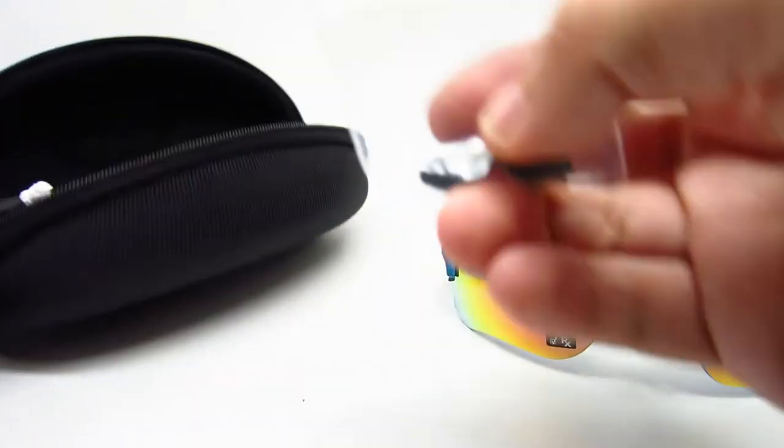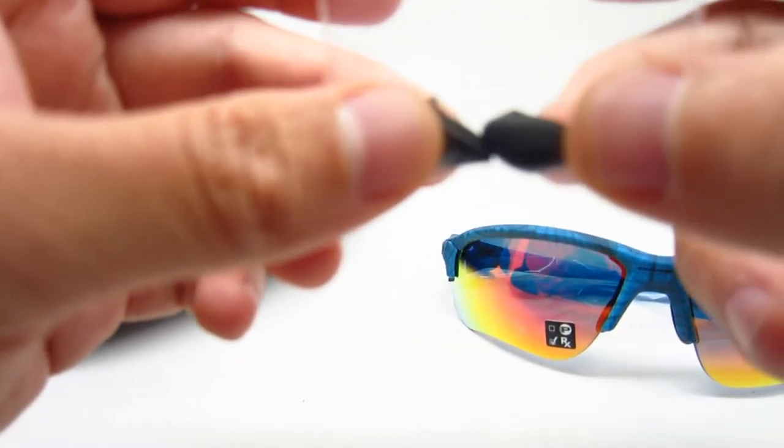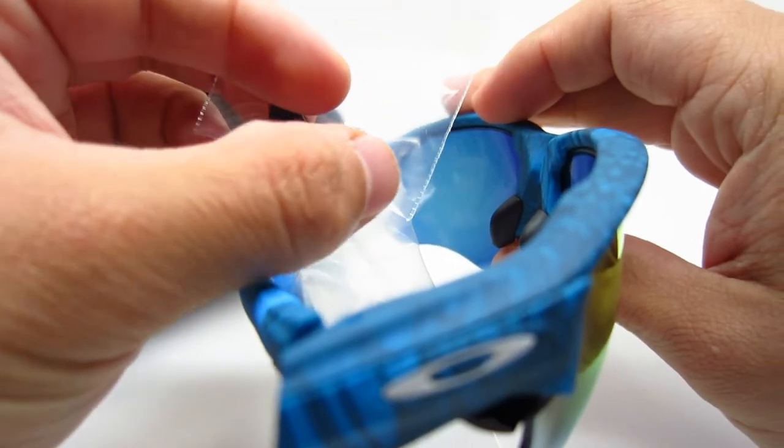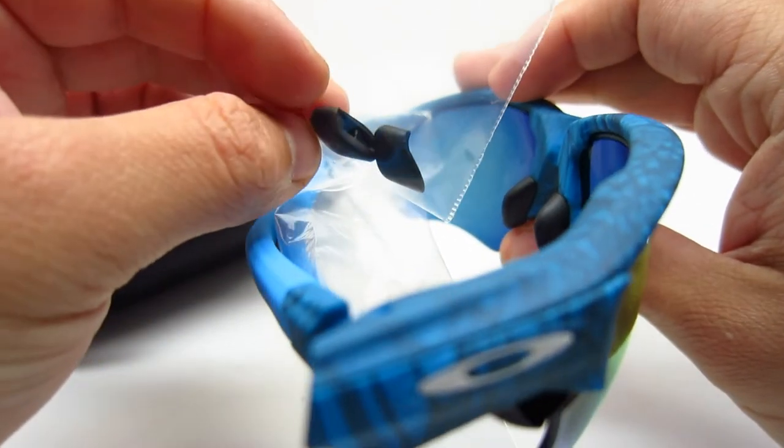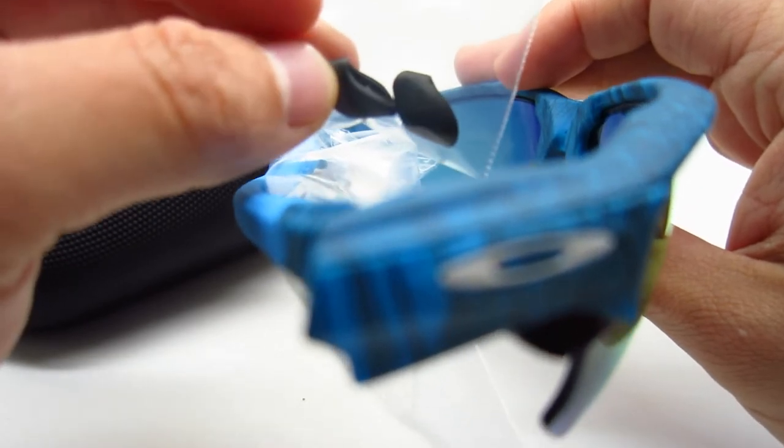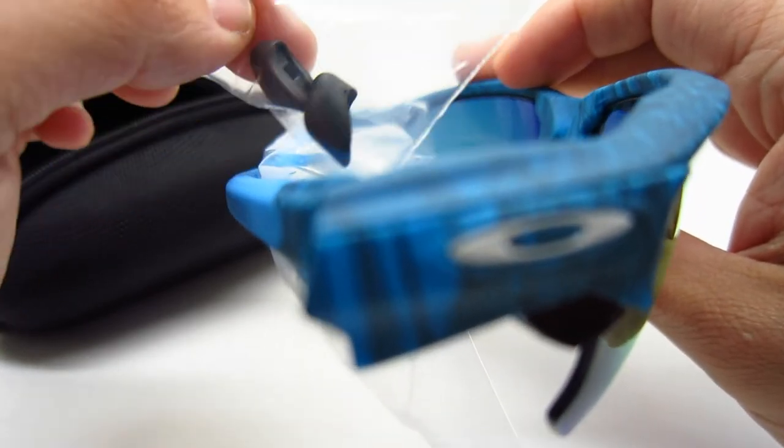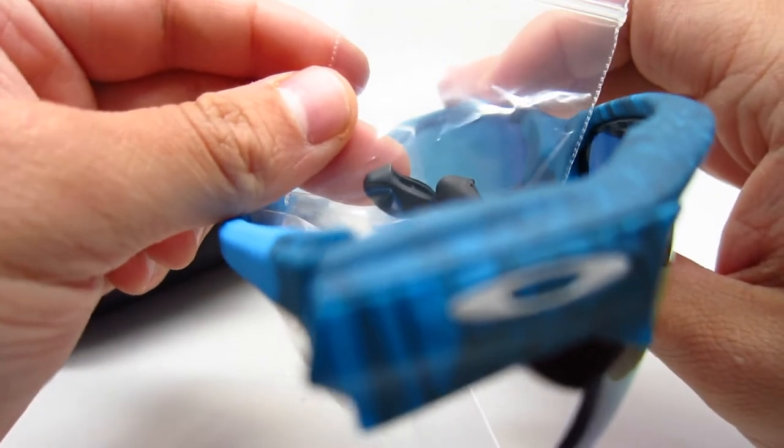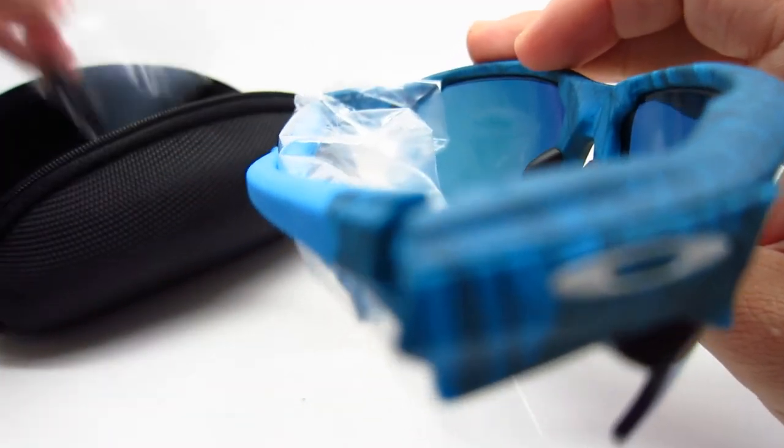Inside you also do get an extra set of nose pads that you can replace here. These are slightly bigger, longer. If you have a smaller nose, probably these will be a little bit better on you for a little bit more grip. There is not a huge difference but they are different, it's not an extra set, it is different.